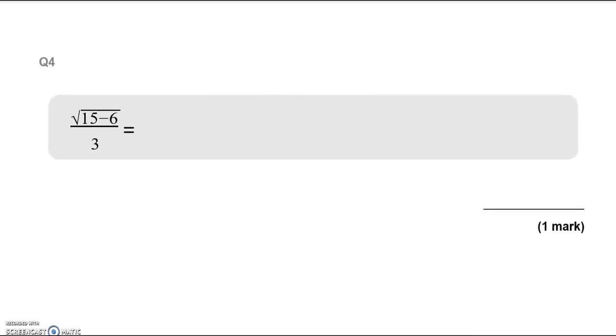We've got to work out square root of 15 take away 6 all over 3. So I've got to apply BIDMAS here. We don't have a bracket, but we have indices. We've got square root, which we need to do first. So within the square root, we've got 15 take away 6, which is 9. So square root of 9 divided by 3. Square root of 9 is actually 3. So 3 over 3, which gives us 1.